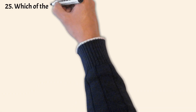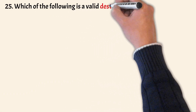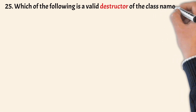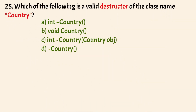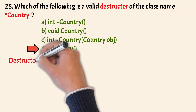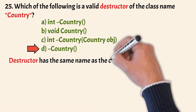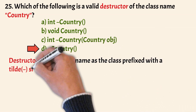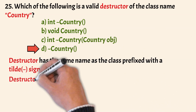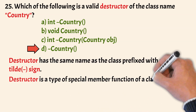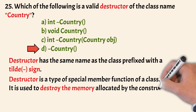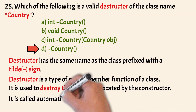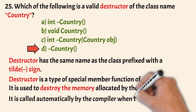Which of the following is a valid destructor of the class named country? The correct answer is option D. A destructor has the same name as the class, prefixed with a tilde sign. A destructor is a type of special member function used to destroy the memory allocated by the constructor, and it is called automatically by the compiler when the object goes out of scope.